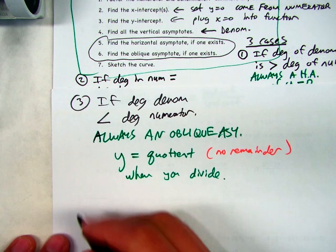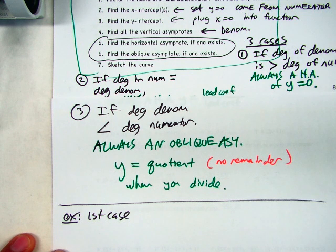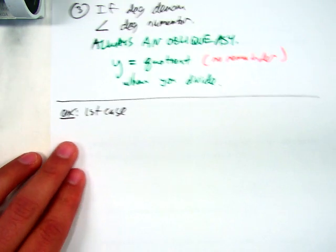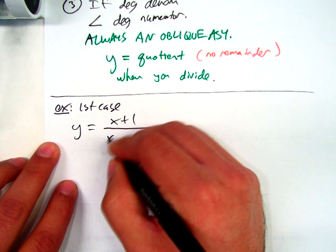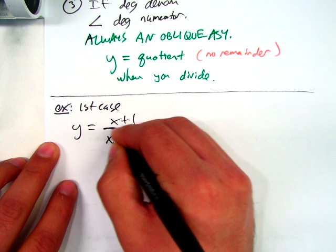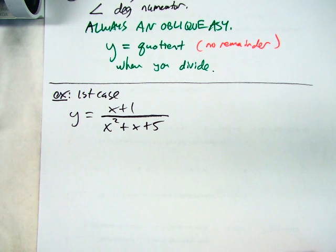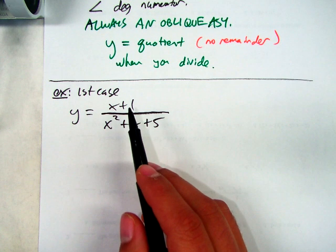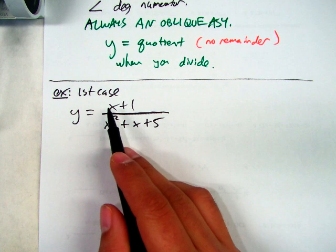Let's start with an example of the first case — degree of denominator bigger. Let's say we have something like x plus 1 over x squared plus x plus 5. Horizontal asymptotes always represent what's going on all the way at the end of the graph, like by infinity or negative infinity. So think about plugging in really, really big numbers for x. A million — let's do a million. On the top, you'd have something really close to a million.